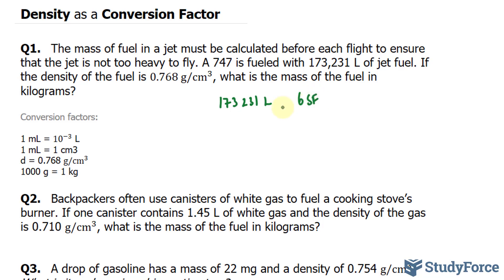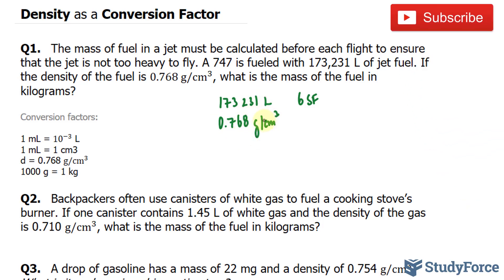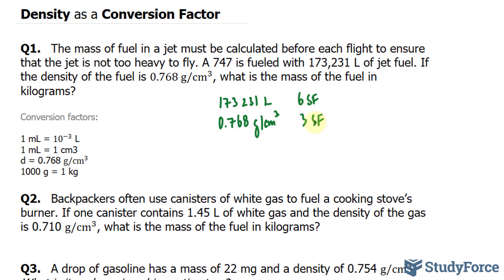We also know that the density is 0.768. This is also a measured number, so this has three significant figures. Therefore, our final answer has to have three significant figures. Our first step is to convert this number to milliliters, and then from there convert milliliters to centimeters cubed, and then subsequently use this final conversion factor to go into kilograms. Let's get started.